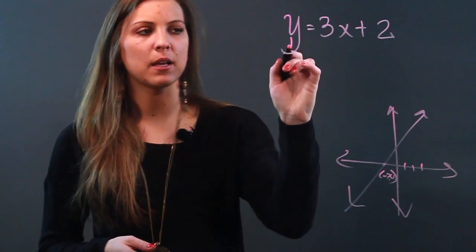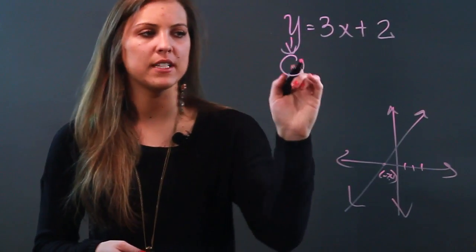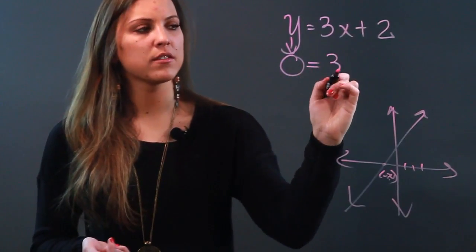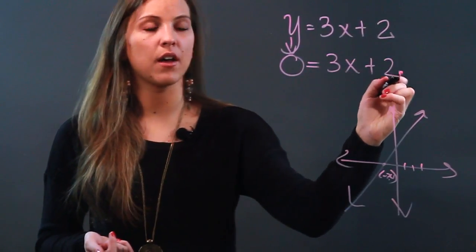So that helps me because what I'm going to do is replace that y with 0 and find out where is x when y is 0. So I'm doing 0 equals 3x plus 2, and I'm just solving for x now.